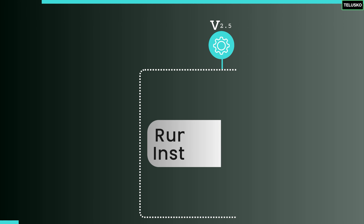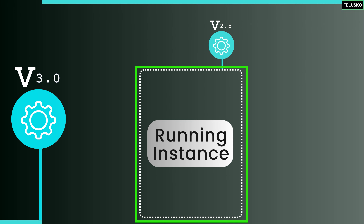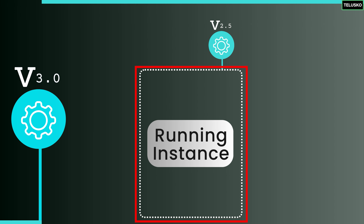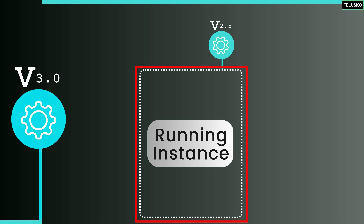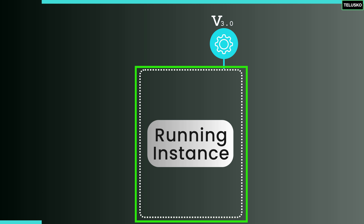For example, if I'm doing an update for an application used in India, I'll do it at night because there are fewer users. When you have a new feature — say your application is at version 2.5 and you want to release version 3.0 — the live server needs to be shut down and upgraded. That can take 2 seconds, 10 minutes, or even 1 hour, and during that time users can't use your application. That's why it happens at night.